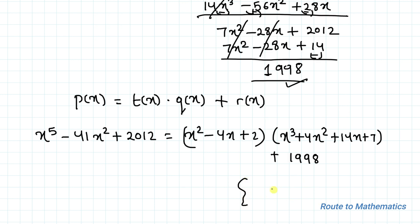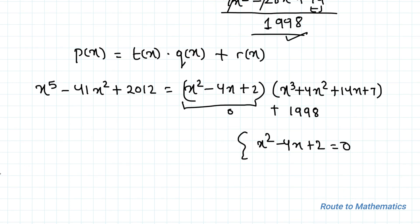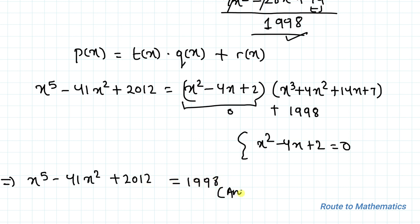From equation 2 we have x² - 4x + 2 = 0, so t(x) is zero. Therefore, t(x) × q(x) = 0 × q(x) = 0. So x⁵ - 41x² + 2012 = 1998 is our answer.